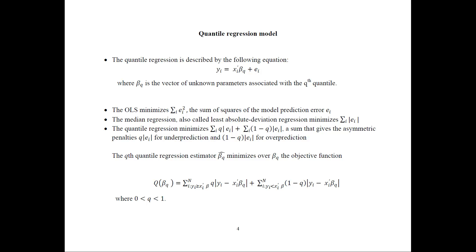On estimation procedures: OLS minimizes the sum of squares of the model prediction error ei. In the median regression, also called the least absolute deviation regression, we minimize the summation of the absolute values of ei. The quantile regression minimizes something similar, where we have the absolute value of ei, but with q and 1 minus q, giving asymmetric penalties for under-prediction and over-prediction.